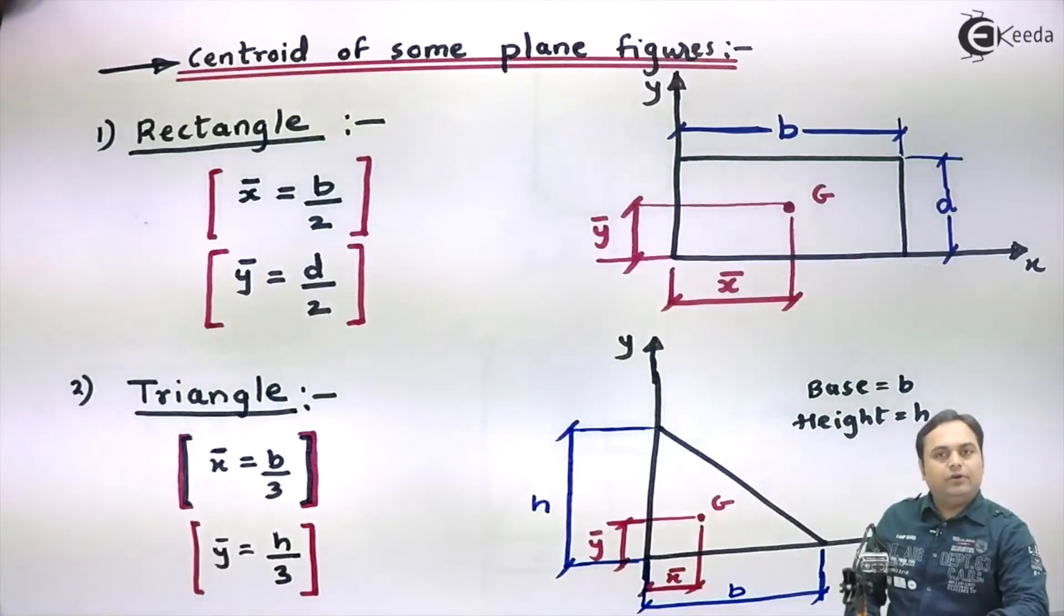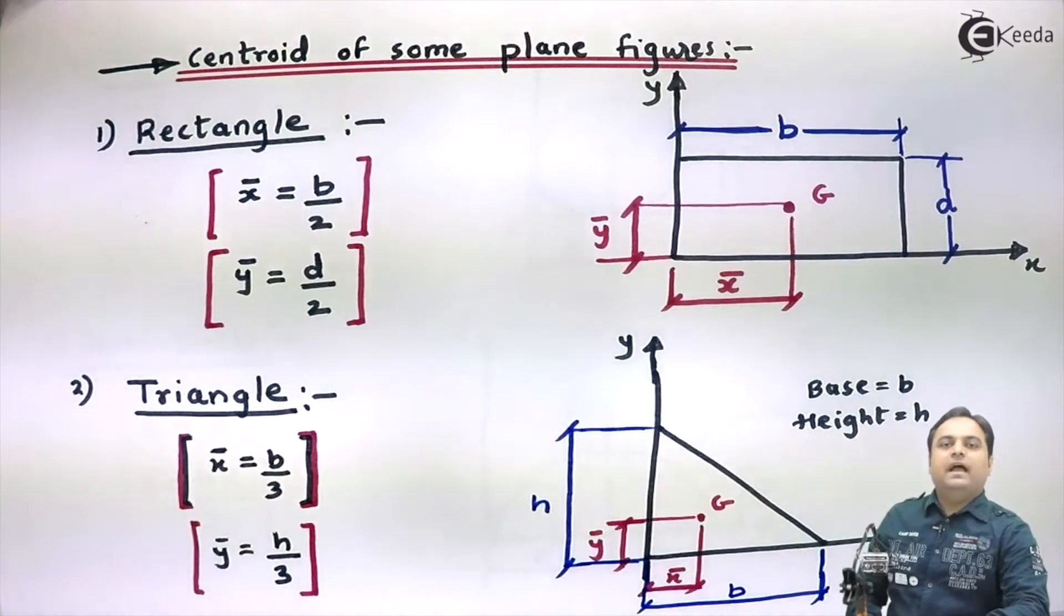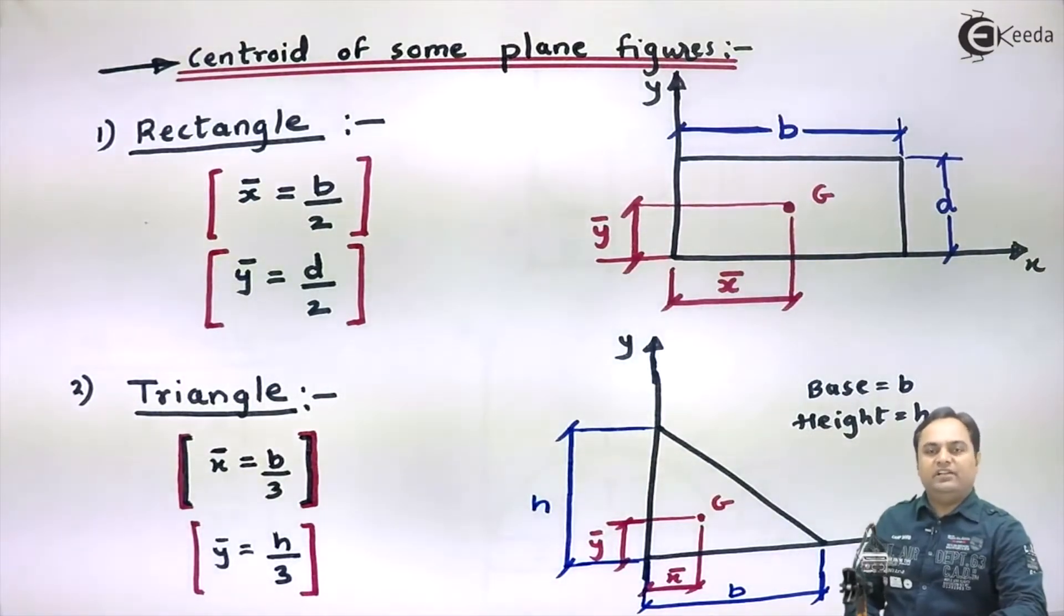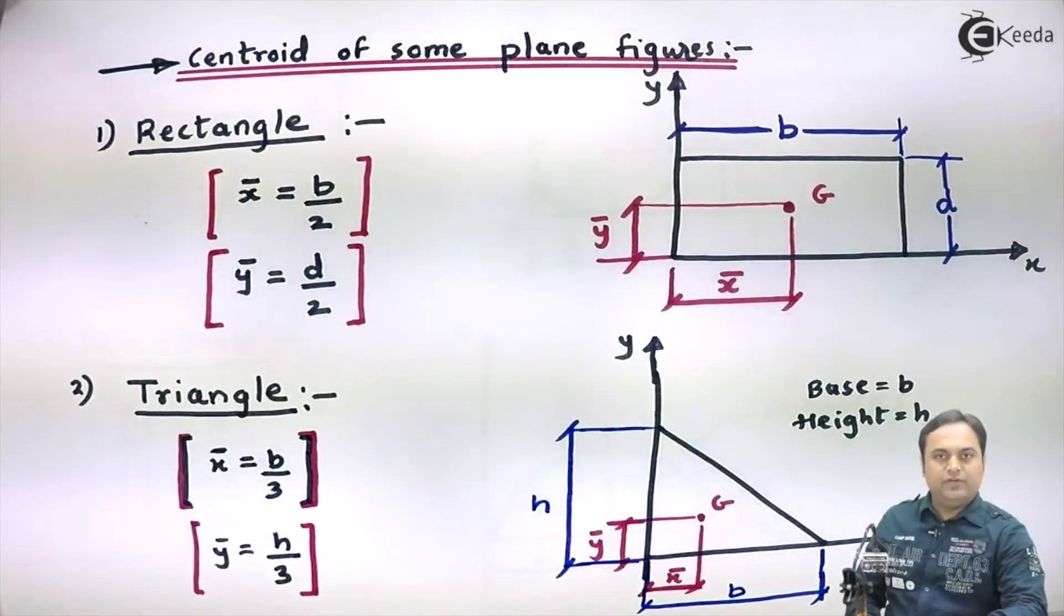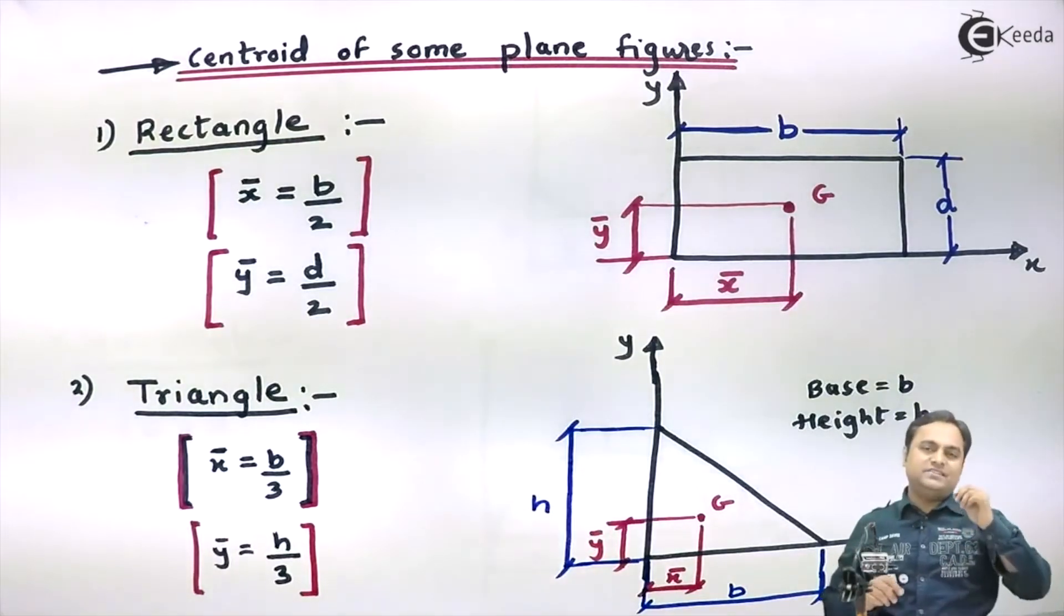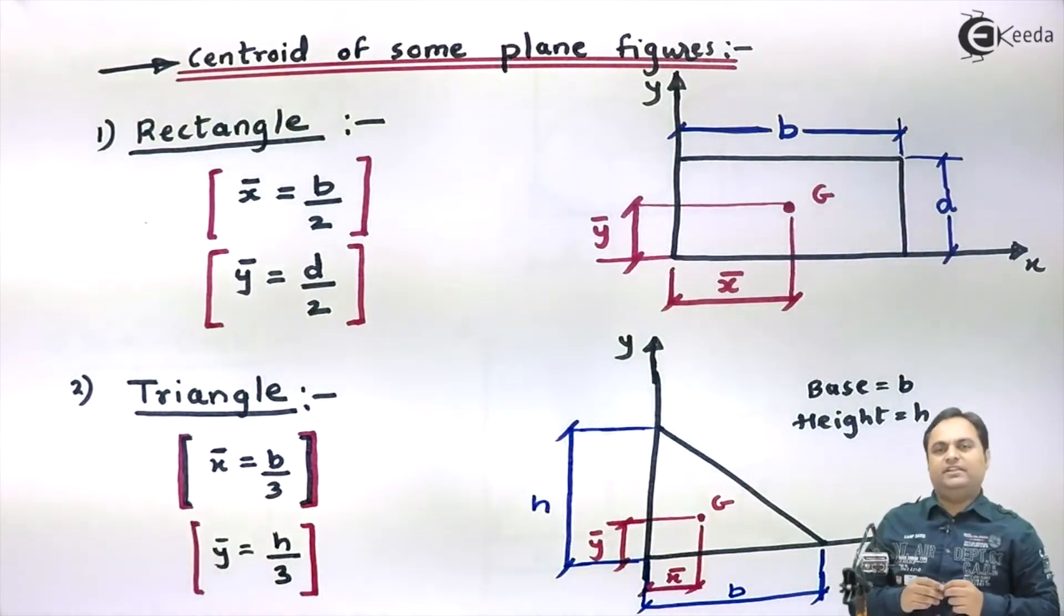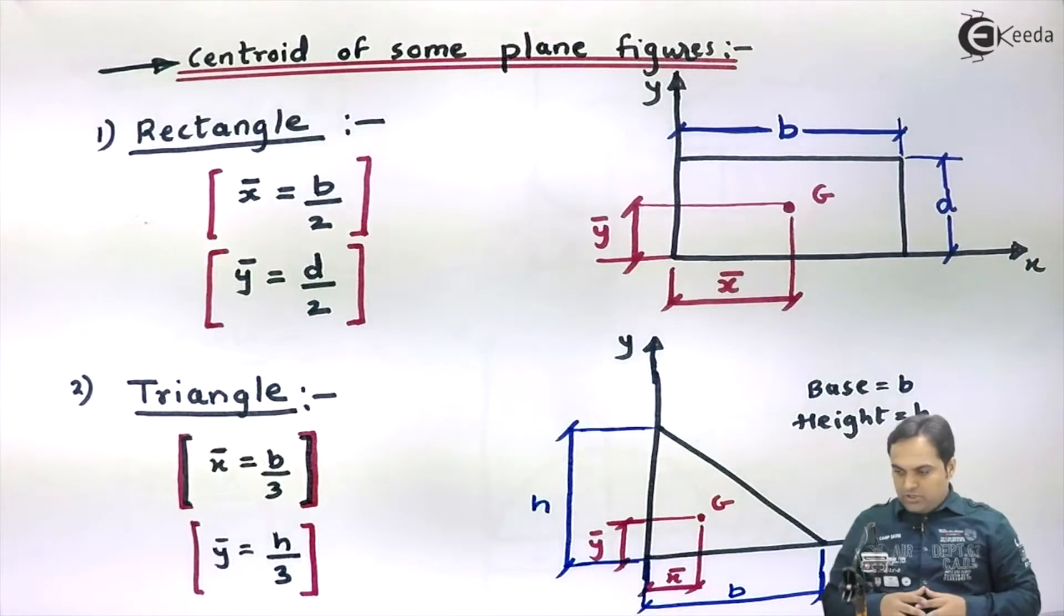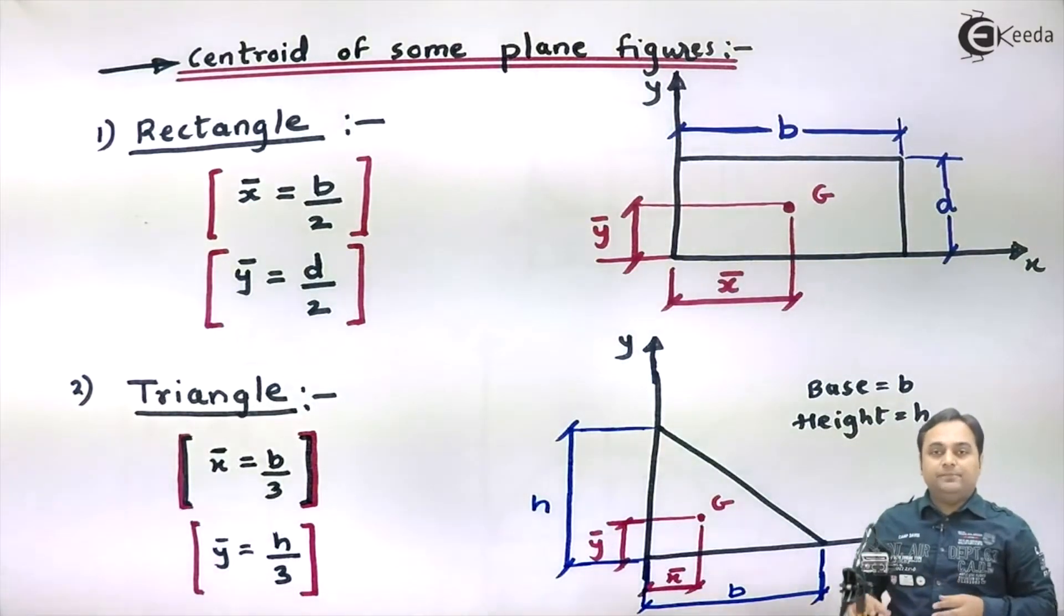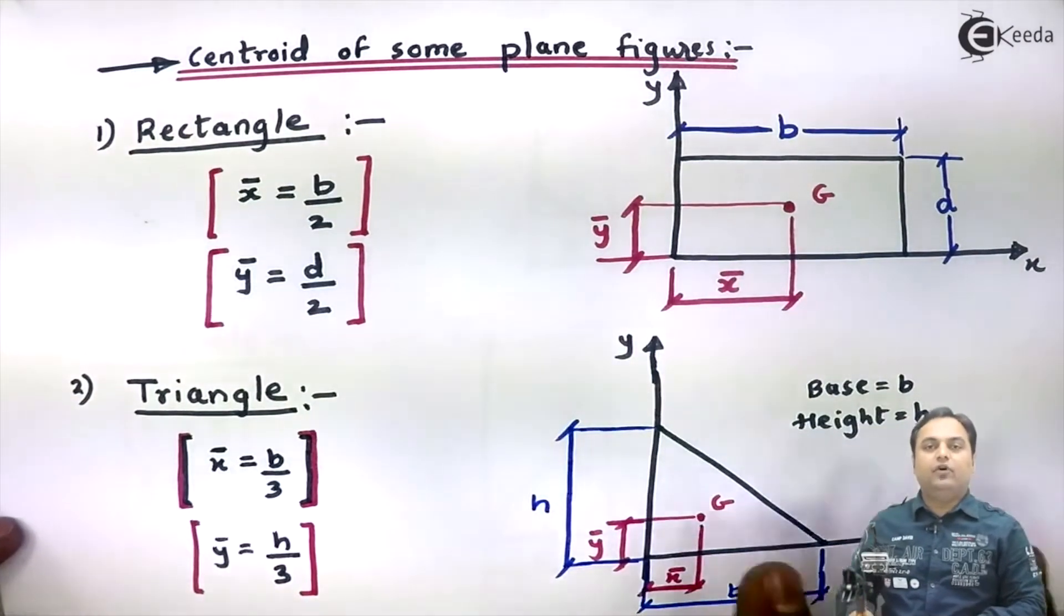Now let us see the centroid of some plane figures. As we have understood from the definition of centroid, that centroid is that single point over which the entire area is active. Now I will be giving the centroid for different plane figures.